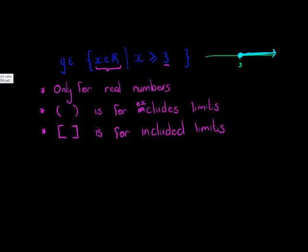So what we'll do is we'll say for this one that x, or in this case it's actually y, y is an element from 3 to infinity. 3 to infinity, this can be a comma or a semicolon. In South Africa we use a semicolon. 3 is included because it's a solid dot.